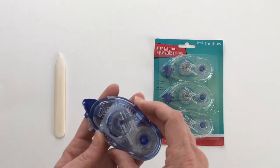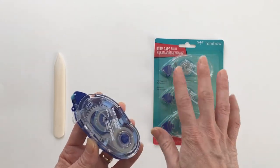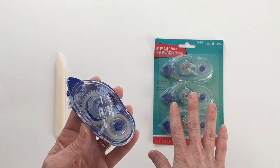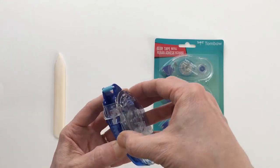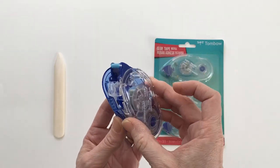And then we have tape runners. This is the applicator, and these are the refills. You can also get these online or at Michael's or any craft supply store. This is how they go together. I'm going to show you real quick because they can be a little confusing.